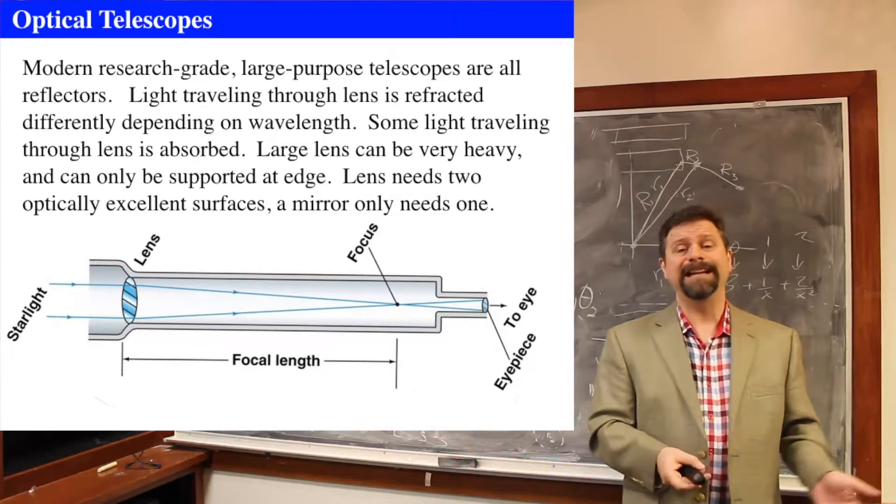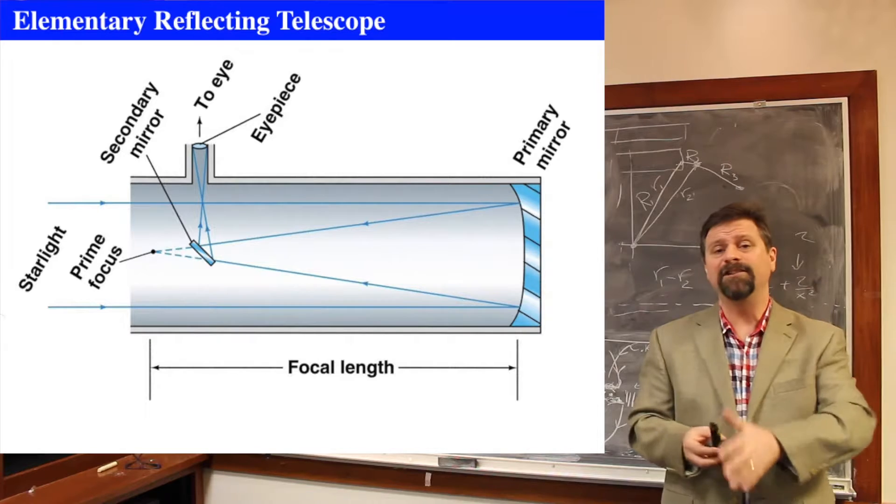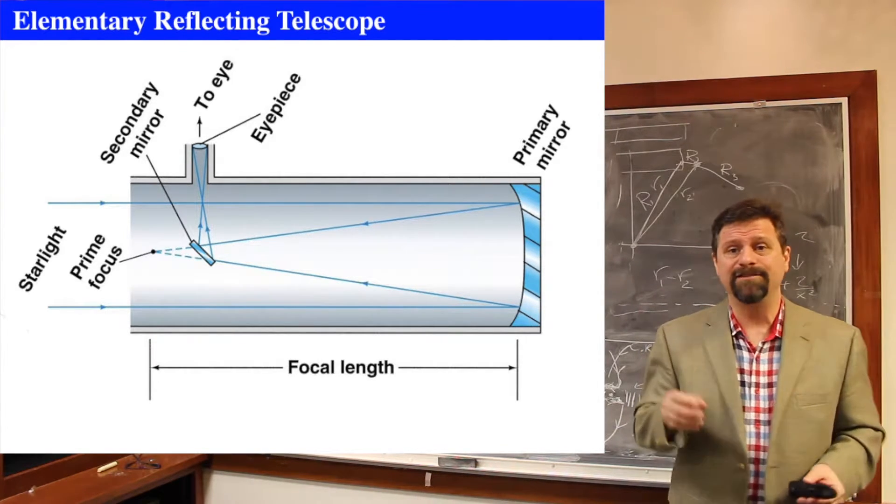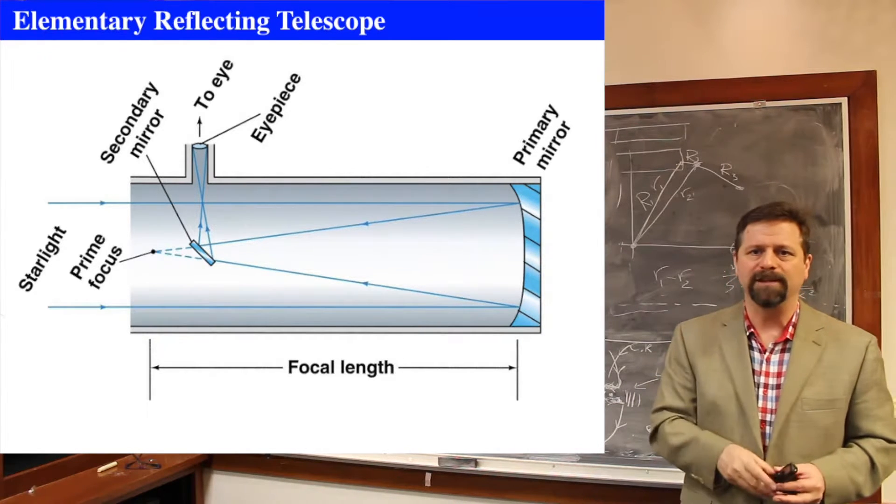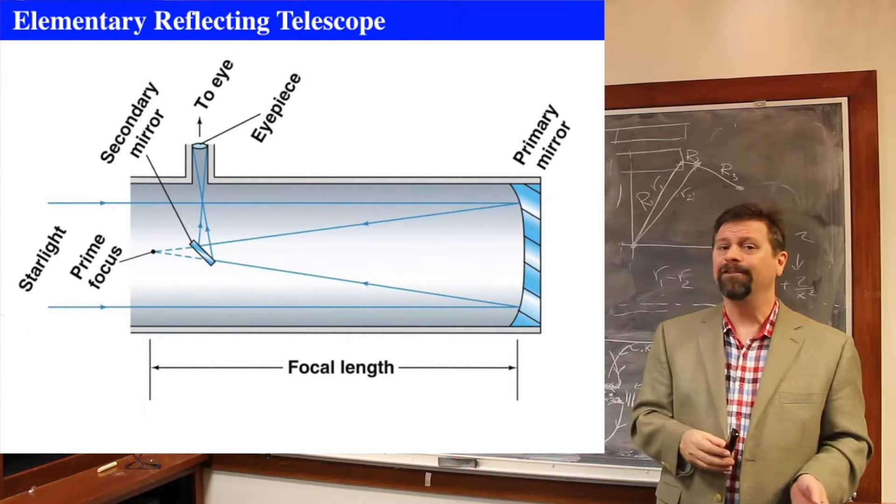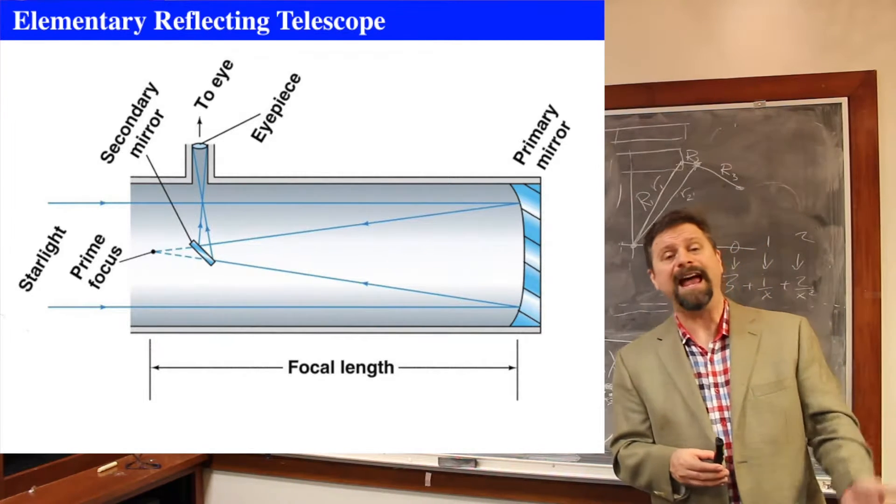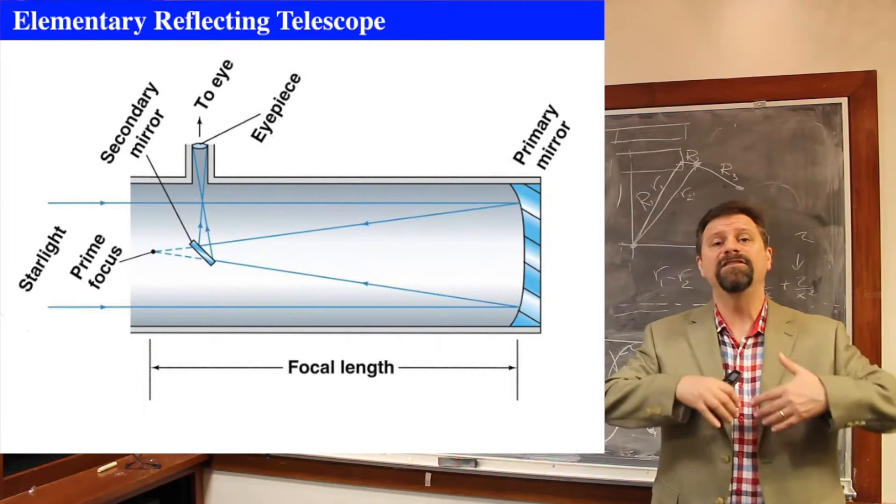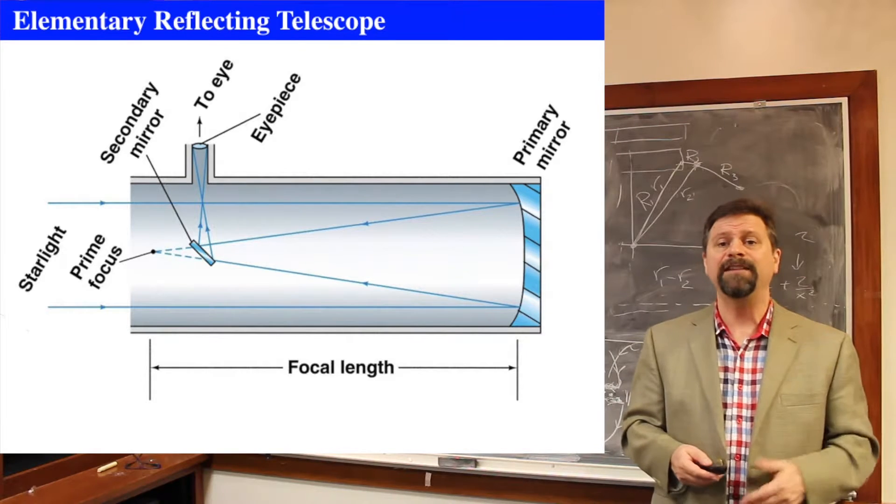So elementary reflecting telescopes, there's lots of different kinds of reflecting telescopes. The basic is you've got a mirror, and then you figure out a way to put your detector at the prime focus or at the focal length. The problem with reflectors is, of course, you've got to put something in the path of the light. So you get diffraction, not just from the telescope, but diffraction around the thing that you put to gather the light with.